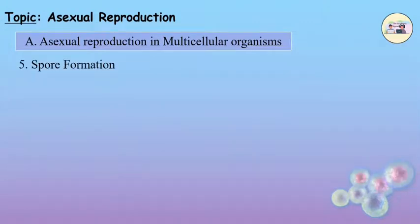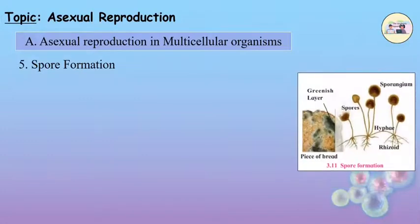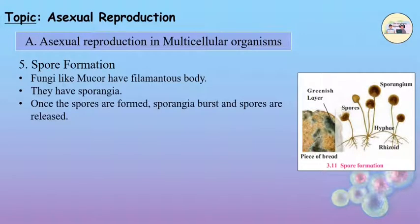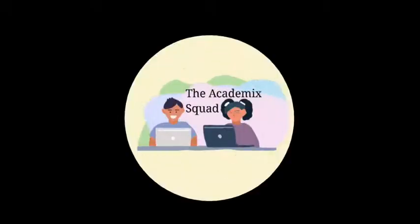5. Spore Formation. Fungi like Mucor have a filamentous body and contain sporangia. Once the spores are formed, the sporangia burst and spores are released. Spores germinate in moist and warm places and a new fungal colony is formed. Thank you so much for watching.